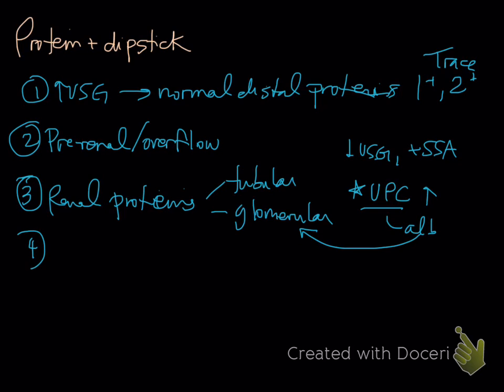Lastly, we have our post-renal proteins. This is usually inflammation or hemorrhage. Post-renal proteinuria is going to be hemorrhage or inflammation after our kidneys or our bladder urethra.